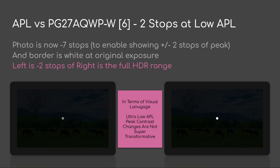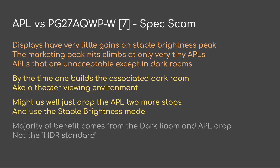This gives you an idea of just how low your APL has to be to actually get the high dynamic range. Another thing to consider: if you're already in a very dark room and you drop down the APL — in this case we're dropping it down 7 stops — that way we can show plus or minus 2 stops of the peak. The border in this case is the white at the original exposure dropped down 7 stops with the image. You'll notice on the left we have minus 2 stops between the white dot and the background, and on the right we have the full dynamic range.